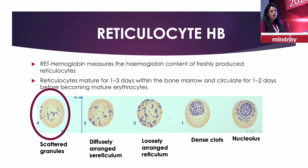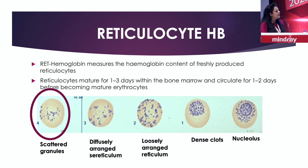Reticulocytes mature for 1-3 days in the bone marrow and for 1-2 days in the peripheral blood. These are the various stages of the reticulocytes from the bone marrow stage to the peripheral blood stage.